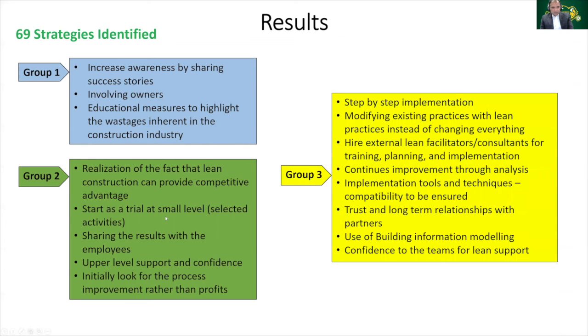For group three, the lean construction should be implemented gradually from one activity to another activity followed by a very rigorous evaluation of complete implementation process. It is very easy to modify the existing practices that can cover lean construction principles and objectives and easy to be implemented with minor modifications.